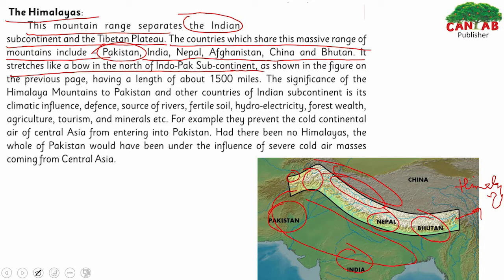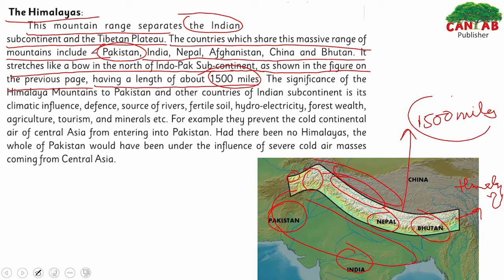The Himalayas have a length of about 1,500 miles and appear arrow-shaped. The importance of the Himalayas for Pakistan and other countries of the Indian subcontinent includes climatic influence — the climate is deeply affected by these mountains.